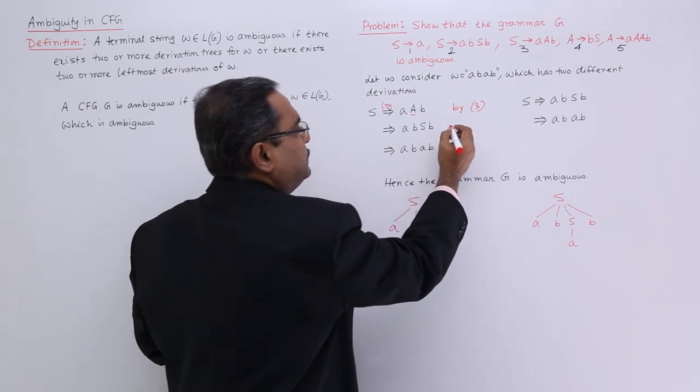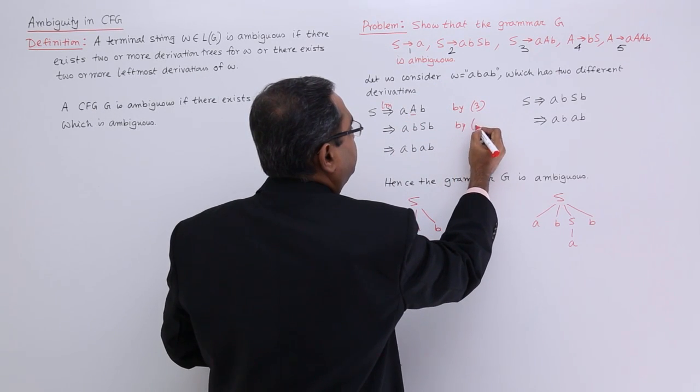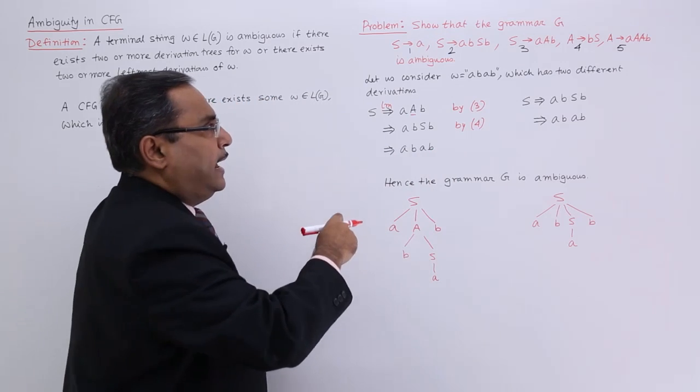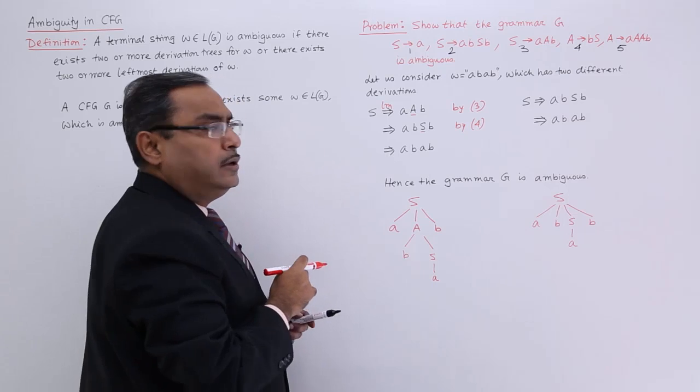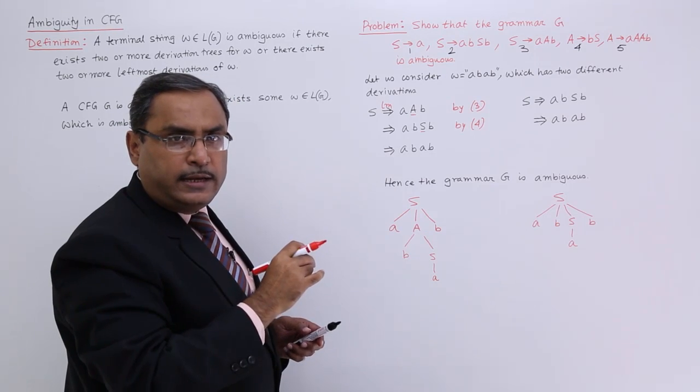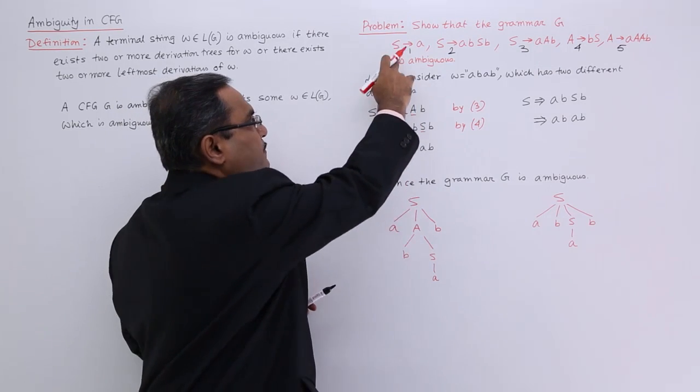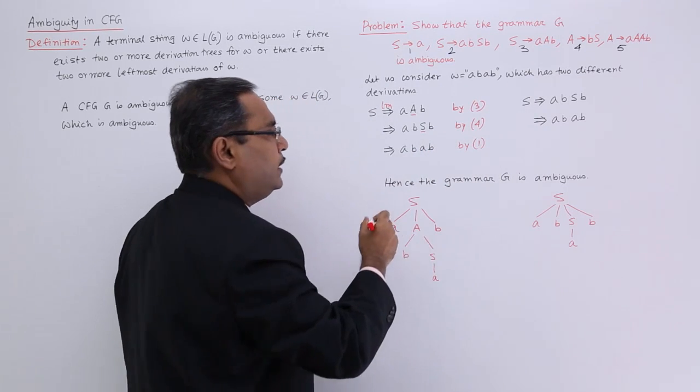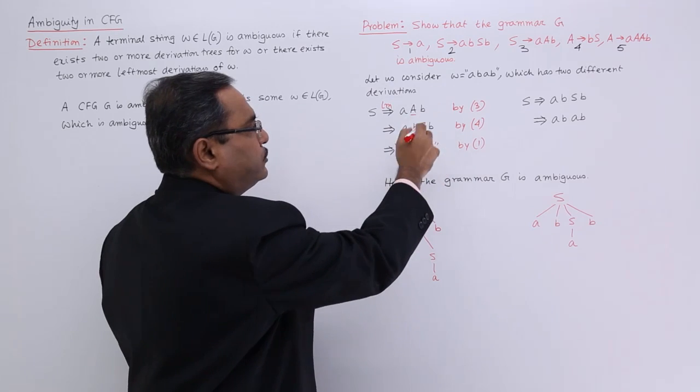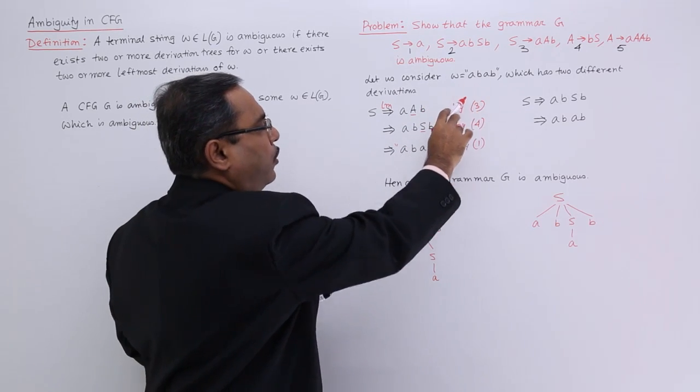A produces bS by production rule number 4, and that S has been replaced by a. Here the leftmost non-terminal is S, so that will be replaced by a, by production rule number 1. Ultimately I am getting this string abab.